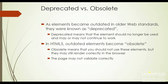As we discussed previously, there is a difference between something becoming deprecated and obsolete. In older versions of HTML, things became deprecated, meaning the element should no longer be used and may or may not continue to work — more times than not, it would not work. In HTML5, outdated elements become obsolete. Obsolete means you should not use these elements, but they may still render correctly in the browser. However, even if they render correctly, the page may not validate correctly.